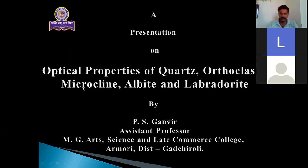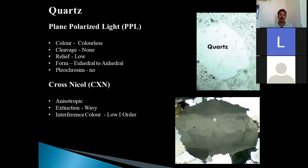So today it was the session on optical properties of quartz, orthoclase, microcline, albite, and labradorite. In quartz, the plane polarized light, the color is colorless. Cleavages are absent. Relief is low. The form can be euhedral to anhedral. And it is anisotropic with distinctive characteristic of wavy extinction. Low first order color.